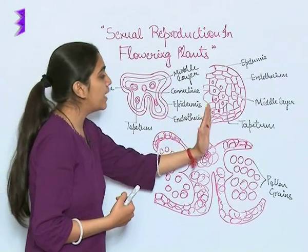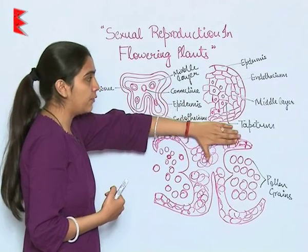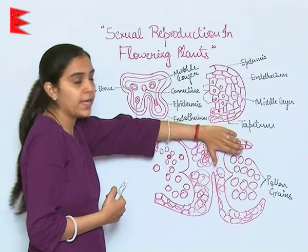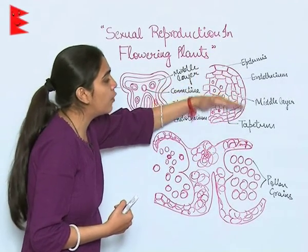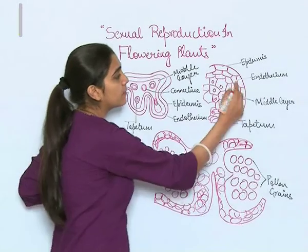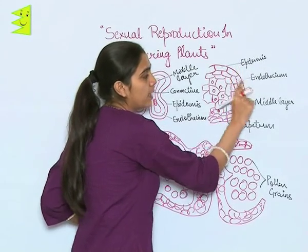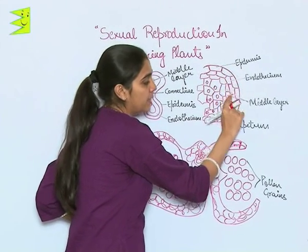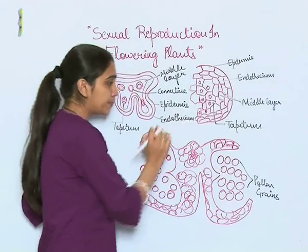When we enlarge this transverse section view under the microscope, we can see the four layers very clearly: the outermost epidermis, then endothecium, the middle layer, and tapetum.